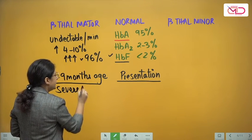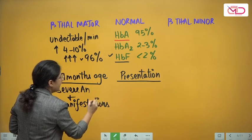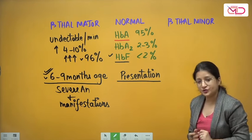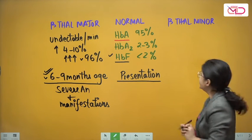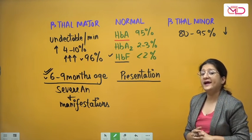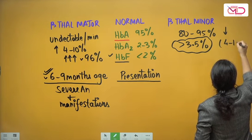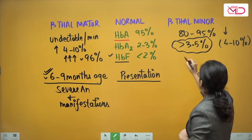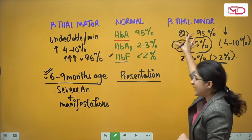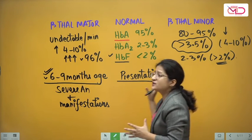The presentation of beta thal major is at about six to nine months of age with severe anemia plus all the other manifestations discussed in the last video. In beta thal minor, hemoglobin A — the normal adult form alpha-2 beta-2 — is reduced to about 80 to 95 percent. HbA2 is more than 3.5 percent, the cutoff, usually in the range of 4 to 10 percent. HbF also rises to about 2 to 3 percent, more than 2 percent. So HbA is reduced but not absent, with slight increase in HbA2, resulting in only mild anemia.